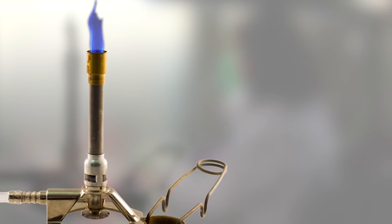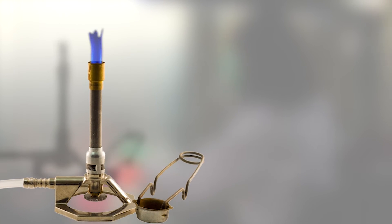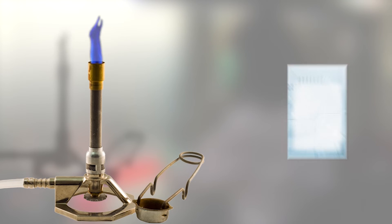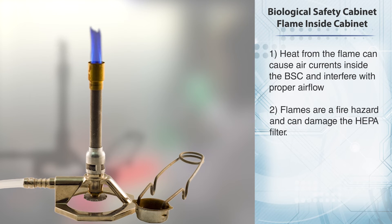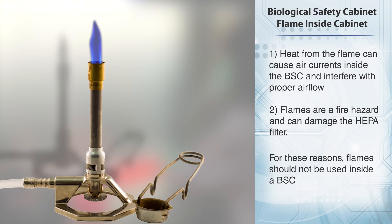Another way to disrupt airflow is by using a flame inside the cabinet. This is not a good idea for two reasons. One, the heat from the flame can cause air currents inside the BSC and interfere with proper airflow. And two, flames are a fire hazard and can damage the HEPA filter. For these reasons, flames should not be used inside a BSC.